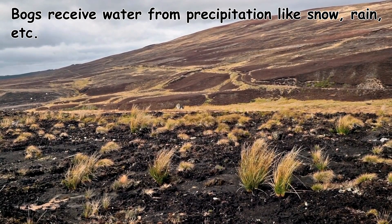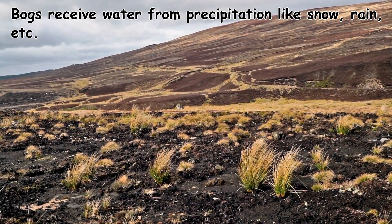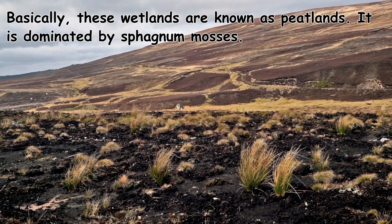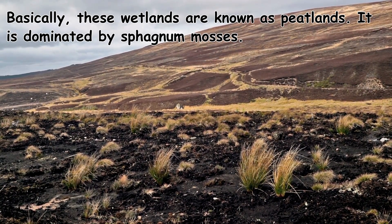Bogs receive water from precipitation like snow and rain. Basically, these wetlands are known as peatlands. They are dominated by sphagnum mosses.